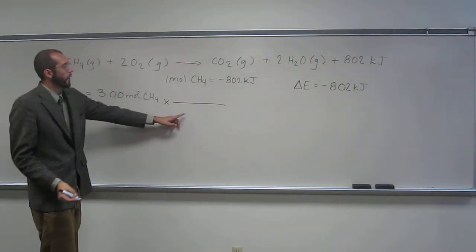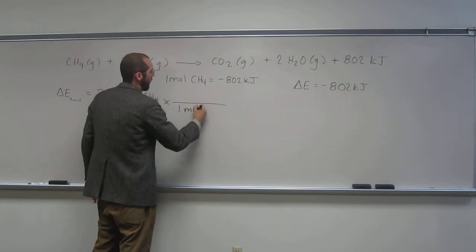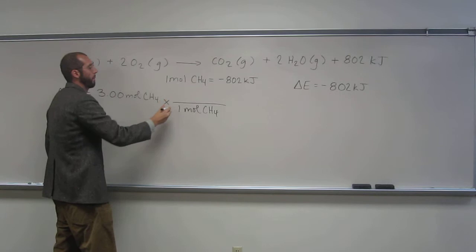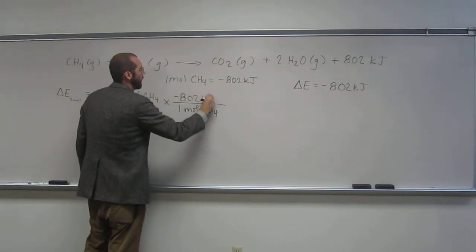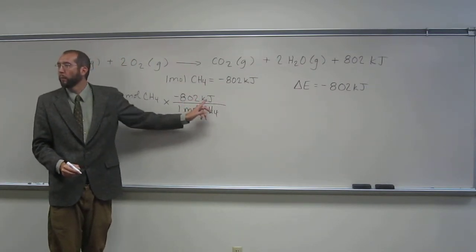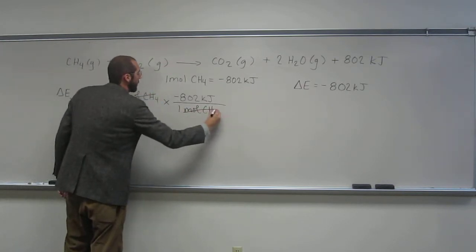And then what would we put on the bottom here? And at the top? Negative 802 kilojoules. Negative 802 kilojoules. So for every one mole of methane, it makes 802 kilojoules. Cancel. Cancel?